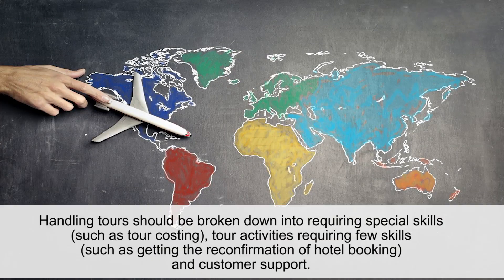Let us take an example. When delineating a tour executive task, one should not call 'handling tours' a task because this term covers too many activities in itself. Ideally, the handling of tours should be broken down into activities requiring special skills such as costing of tours, activities requiring few skills such as getting hotel booking information from the travel agent or tour operator, as well as getting customer support for every step.